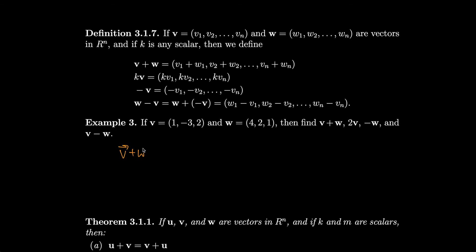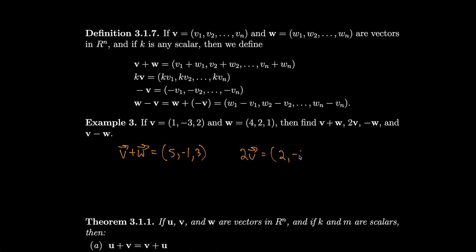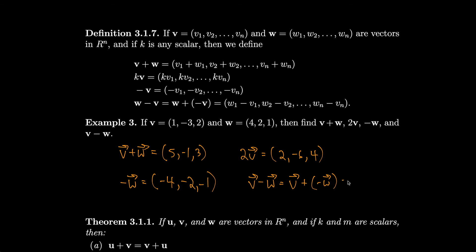Let's do a couple of examples practicing these operations. For v plus w, we just add the components to get (5, -1, 3) — the same result we'd get geometrically using the parallelogram rule or tip-to-tail. For 2v, we scale each component by 2 to get (2, -6, 4). For minus w, we multiply each component by -1 to get (-4, -2, -1). And for v minus w, we take v plus (minus w) or just subtract components, getting (-3, -5, 1).